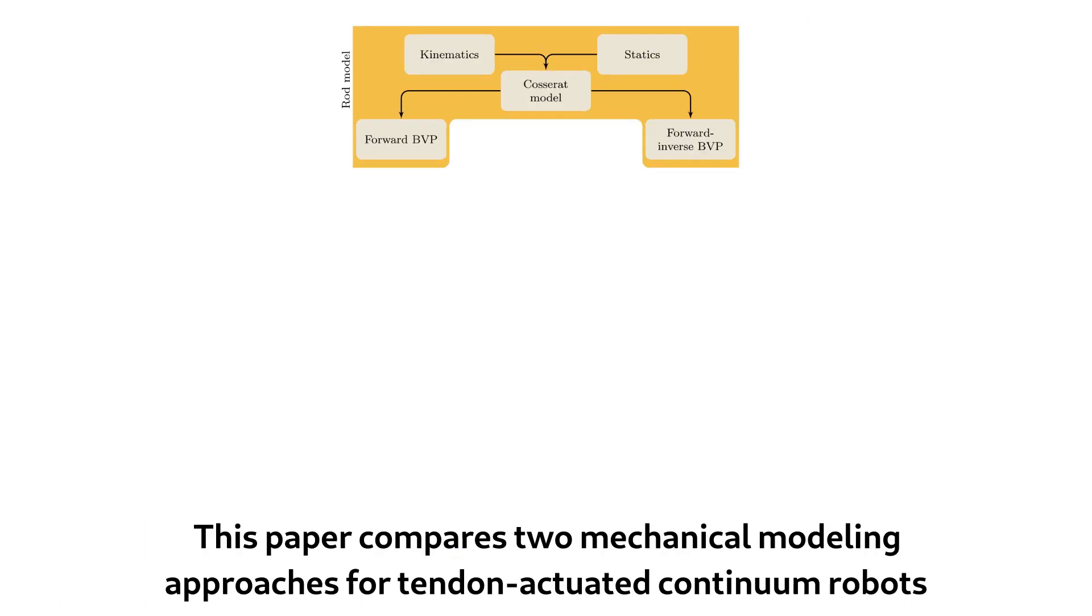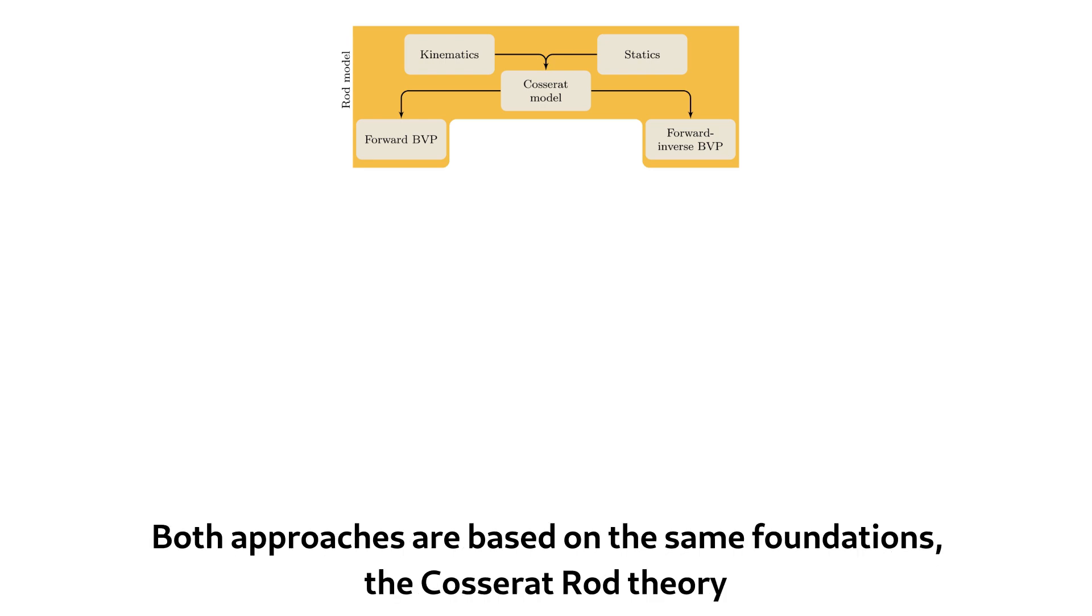This paper compares two mechanical modeling approaches for tendon-actuated continuum robots. Both approaches are based on the same foundation, the Cosserat-Rod theory.